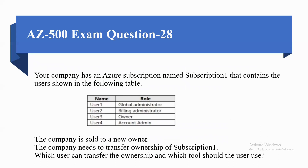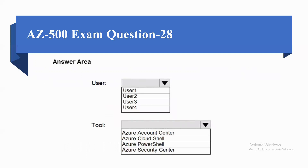Coming to the next question. Your company has an Azure subscription named Subscription 1, which contains users as follows: User 1 as Global Administrator, User 2 as Billing Administrator, User 3 as Owner, and User 4 as Account Admin. The company is sold to a new owner and needs to transfer ownership of Subscription 1. Which user can transfer ownership, and which tool should they use? Options for user: User 1, User 2, User 3, or User 4.